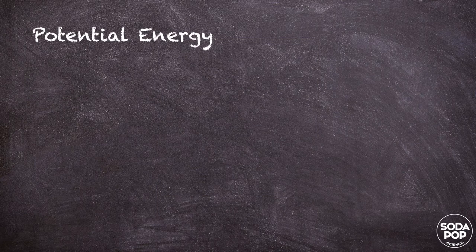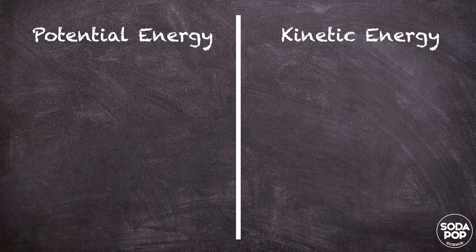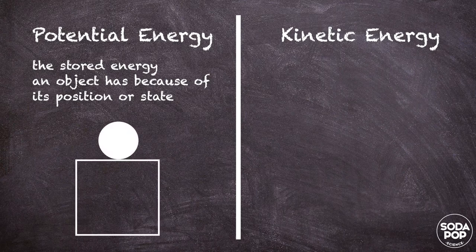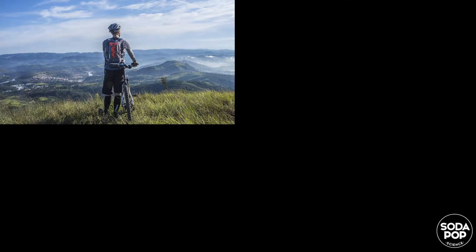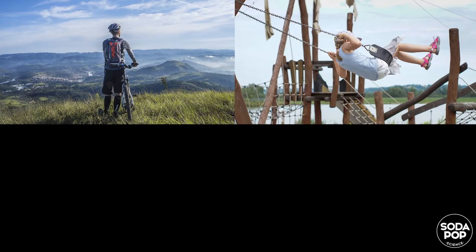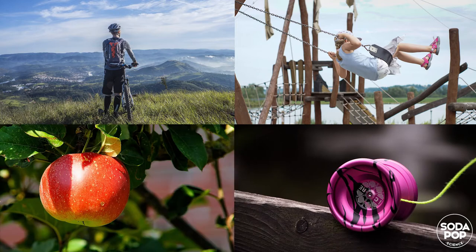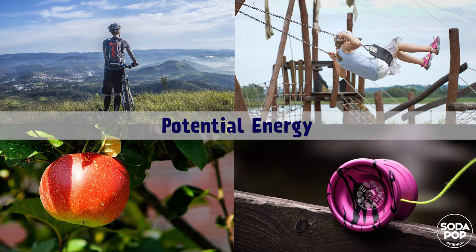First, we need to talk about what potential energy and kinetic energy are. Potential energy is the stored energy an object has because of its position or state. A bike on top of the hill, a swing at its highest point, a yo-yo before it is released, and a ripe fruit before it falls all have potential energy.